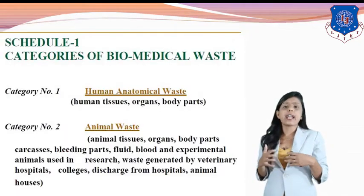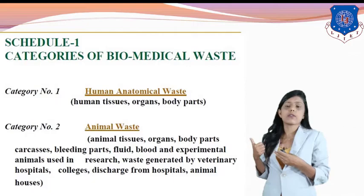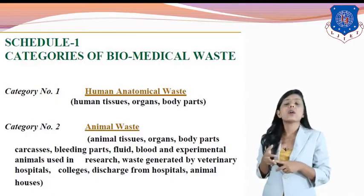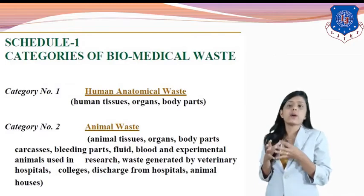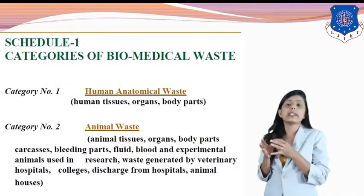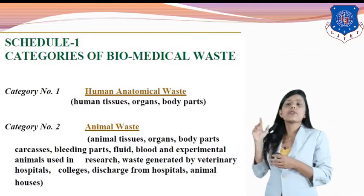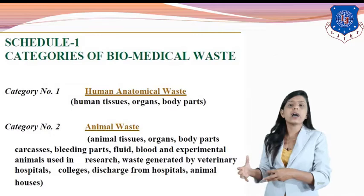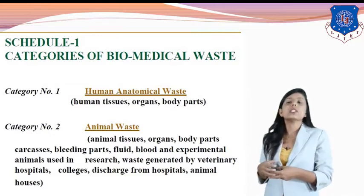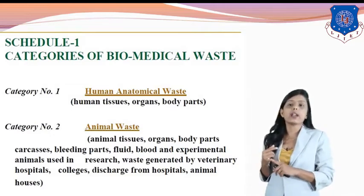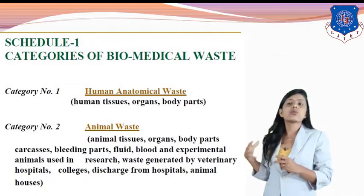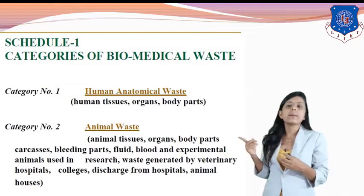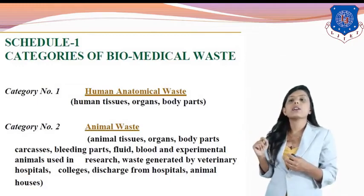There are different categories of biomedical waste. The first category is human anatomical waste — any part of our body that is discarded or taken out. Human tissue, organs, and body parts fall under category one.